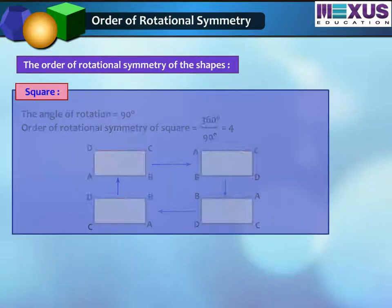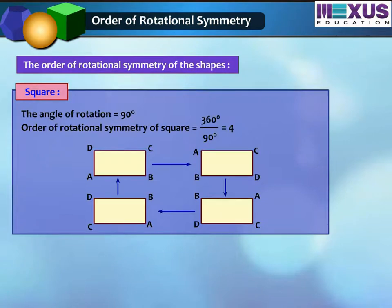First, square. The angle of rotation of a square is 90 degrees. So, the order of rotational symmetry will be 360 degrees divided by 90 degrees, which equals 4.